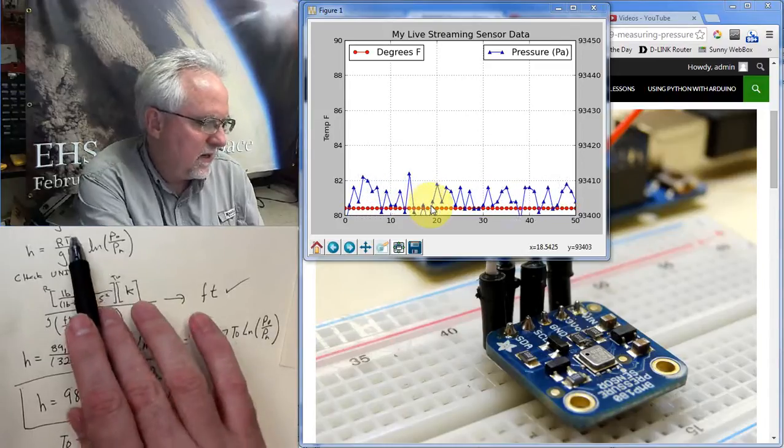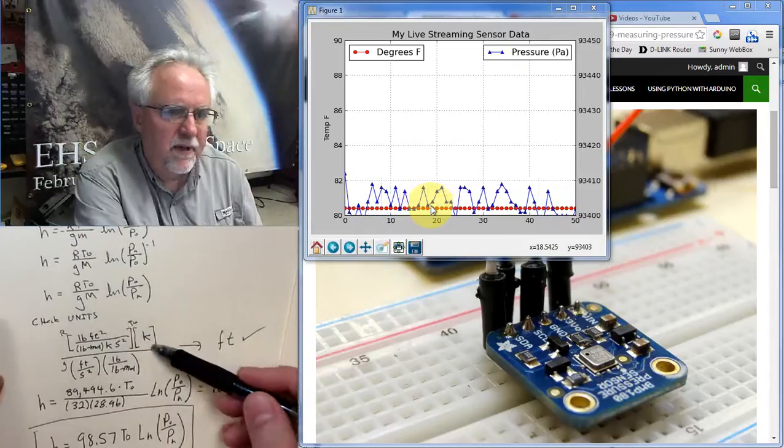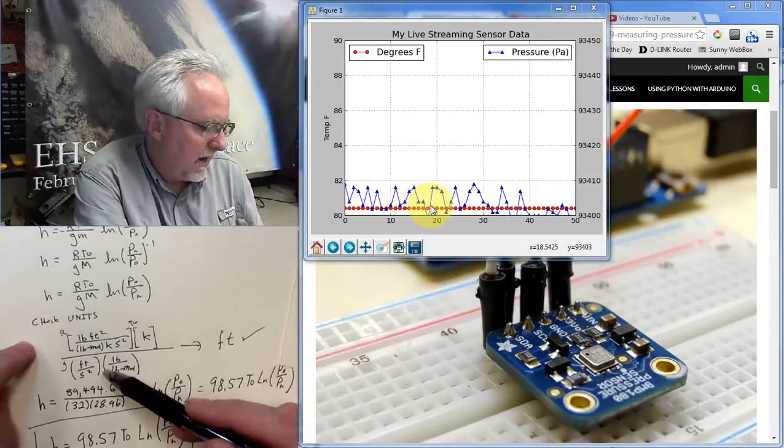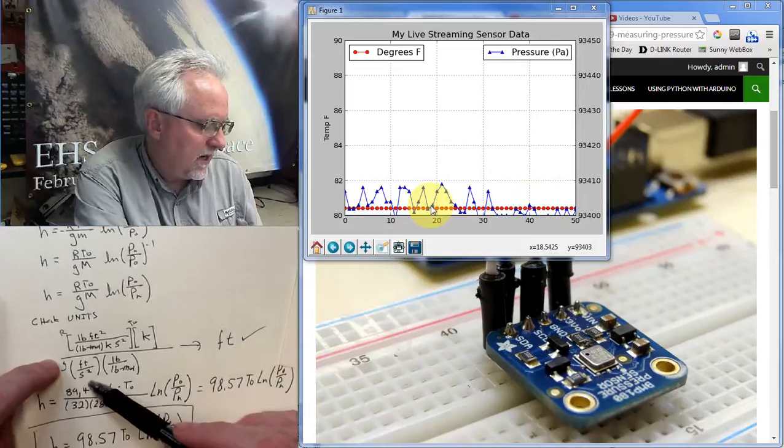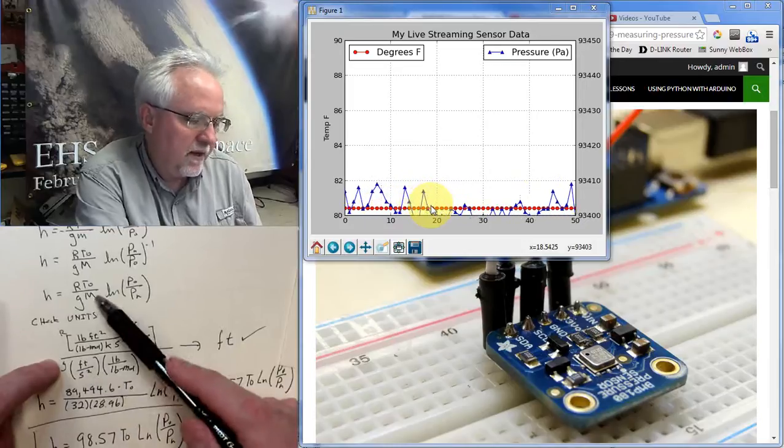And then T, the T is just Kelvin. So I have Kelvin. And then the G here is in feet per second squared. That's an acceleration.